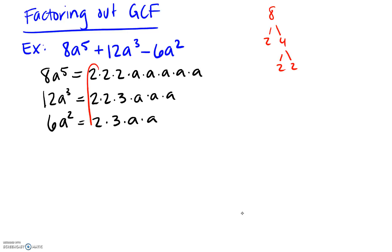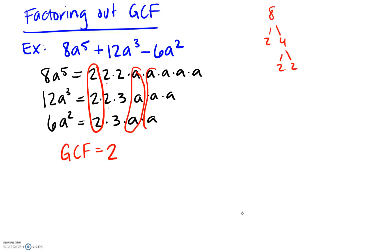Now we look for what's in common. All three terms have a 2, so our GCF has a factor of 2. For the next numbers we have 2, 2, and 3 — no further match since the third term doesn't have another 2 and the first term doesn't have a 3. For the variables, we have five a's, three a's, and two a's — only two a's appear in all terms. So the GCF is 2a squared.